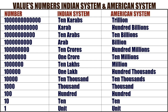One after 12 zeros: called as 10 Kharabs in Indian system, trillion in American system. One after 11 zeros: called as Kharab in Indian system, hundred billions in American system. One after 10 zeros: called as 10 Arabs in Indian system, ten billions in American system. One after 9 zeros: called as Arab in Indian system, billion in American system. One after 8 zeros: called as 10 crores in Indian system, hundred millions in American system. One after 7 zeros: called as 1 crore in Indian system, 10 millions in American system.